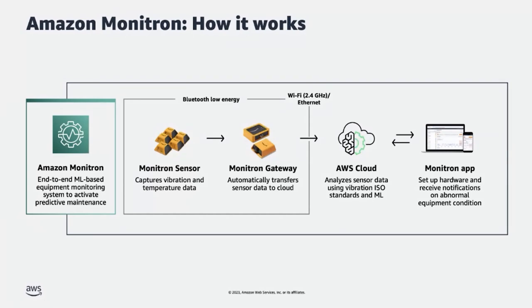Monitron provides customers the ability to start monitoring the health of equipment within minutes and to get notified if there is any abnormal behavior in the asset. It detects potential failure in equipment, enabling customers to take proactive actions and reduce unplanned downtime. Monitron includes everything you need to get started. It has purpose-built wireless sensors to capture the temperature and vibration patterns of the asset. Vibration and temperature are good indicators of the health of the asset.